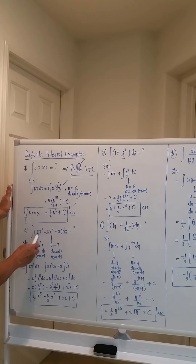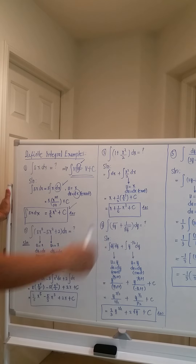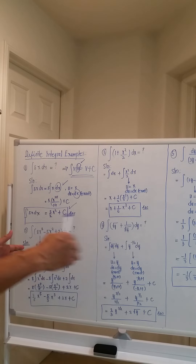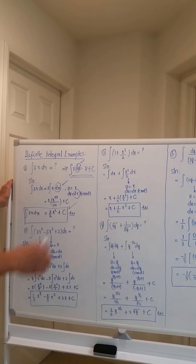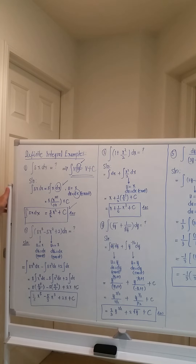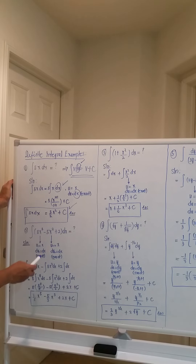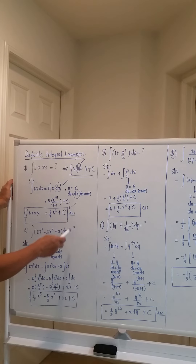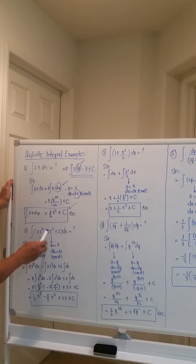Number two: the integral of the quantity 8x⁴ minus 5x² plus 2, dx. This is a sum — don't be afraid. Just as in differentiation, if there are several sums, you take the differential individually; integration is the same. The first term is constant times a function, the second is constant times a function, and the third is just a constant. The u here is x — try to verify the dx differential.